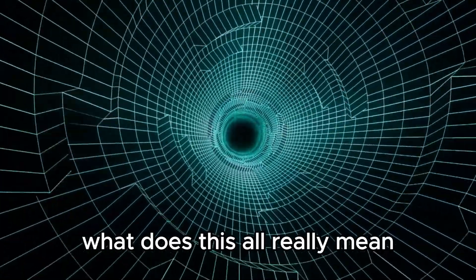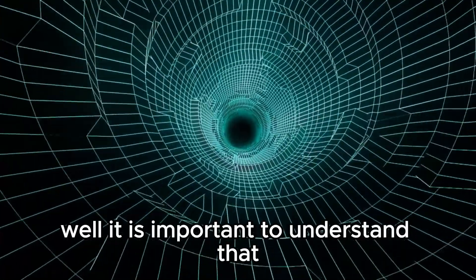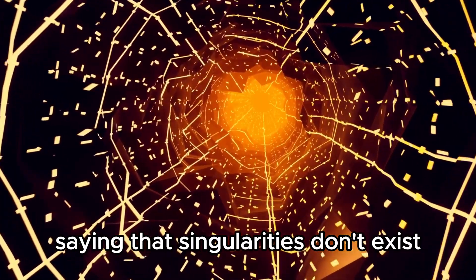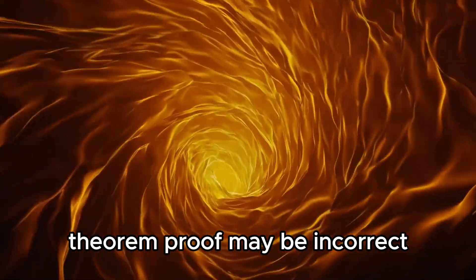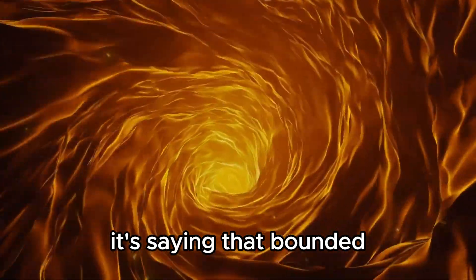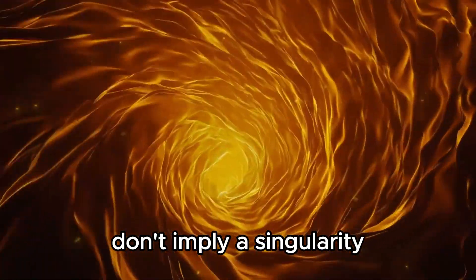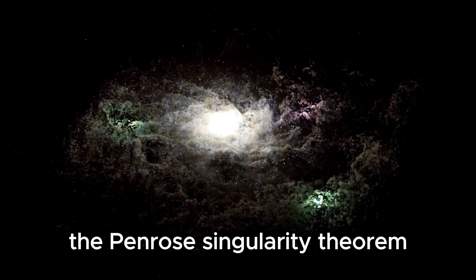So what does this all really mean for the existence of singularities? Well, it is important to understand that Kerr's argument isn't necessarily saying that singularities don't exist. It's saying that the conclusions of the singularity theorem proof may be incorrect. It's saying that bounded affine parameters for null geodesics don't imply a singularity, contrary to the common interpretation of the Penrose singularity theorem.